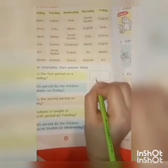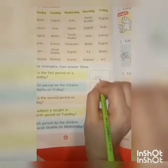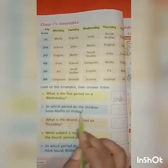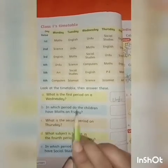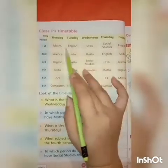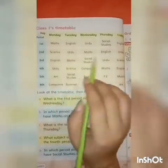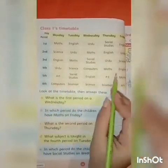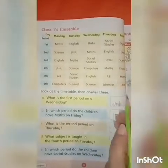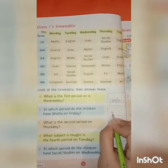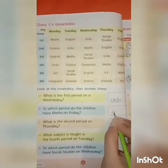Let's write U-R-D-U, Urdu. Question B: In which period do the children have Maths on Friday? Friday: first period is English, second is Urdu, third is Science, fourth is English, and fifth is Maths. We have to write here: 5th.